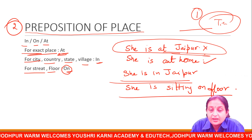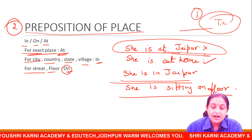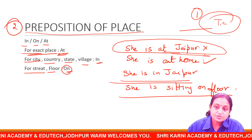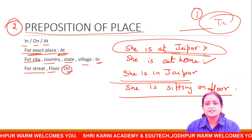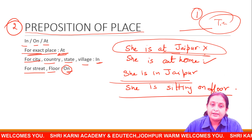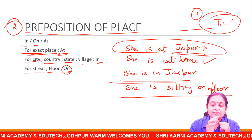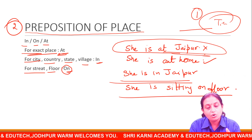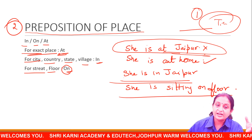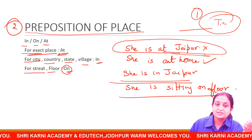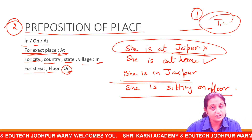मेरा motto ये है कि आप इसको सीखें, रटें नहीं. आप ये normal sentences बोलते हो — जैसे कि आप floor पर बैठे हैं — तो इसे use करें. Exam होगा तब देखेंगे, copy में लिखना है — वो काम नहीं करना है. मेरा motto ये है कि आप इसे अपने daily pronunciation में use करें, जिससे कि ये concepts आपको proper clear हो जाएंगे. ये concept clear तब होंगे जब आप इसको जितना ज़्यादा हो सके उतना use करेंगे.